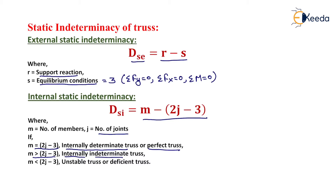If M is less than 2J minus 3, the truss is an unstable or deficient truss. In this way, we can determine both the internal and external static indeterminacy.